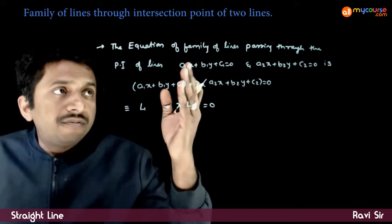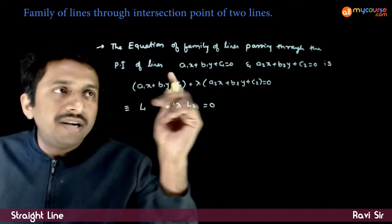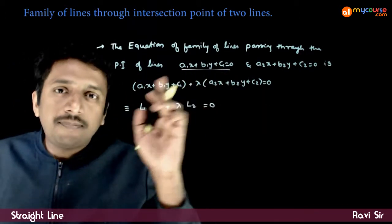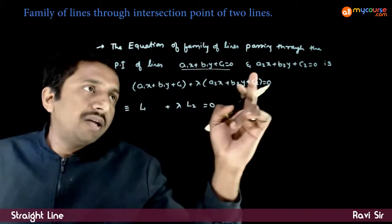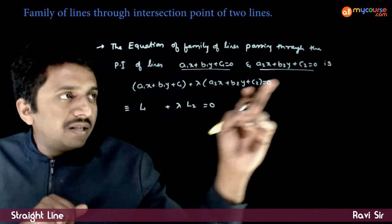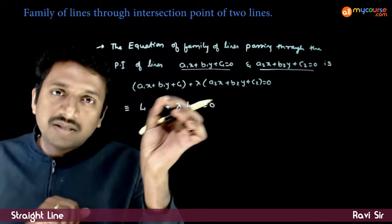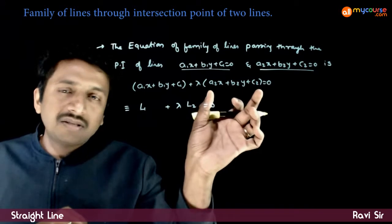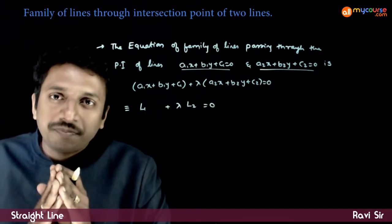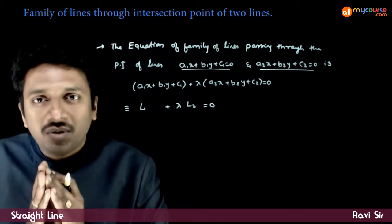The equation of the family of lines passing through the point of intersection of lines a1x + b1y + c1 = 0 and a2x + b2y + c2 = 0 is: a1x + b1y + c1 + λ(a2x + b2y + c2) = 0, or simply L1 + λL2 = 0.